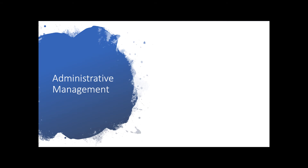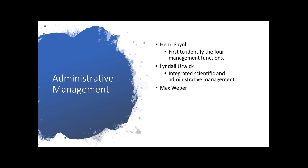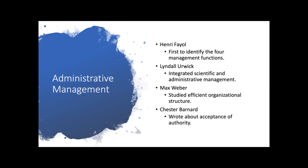Remember there are two branches of the classical approach. The second branch is administrative management. Early thinkers in this school introduced things like the four managerial functions that we still talk about today, the integration of scientific and administrative principles, studying efficient organizational structures, and the theory of the acceptance of authority — how employees become willing to take direction from their boss. All these contributions formed the administrative management branch, primarily focusing upon the entire organization.